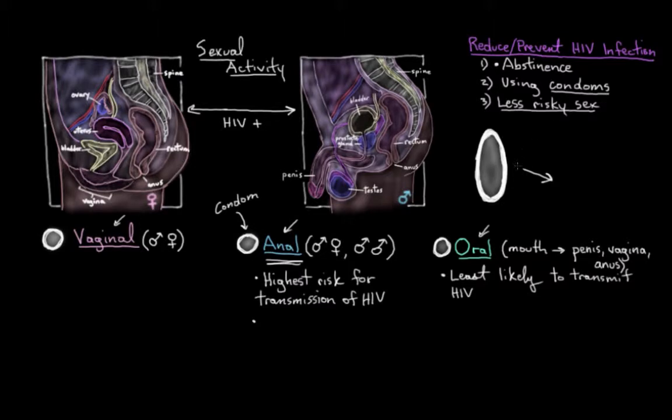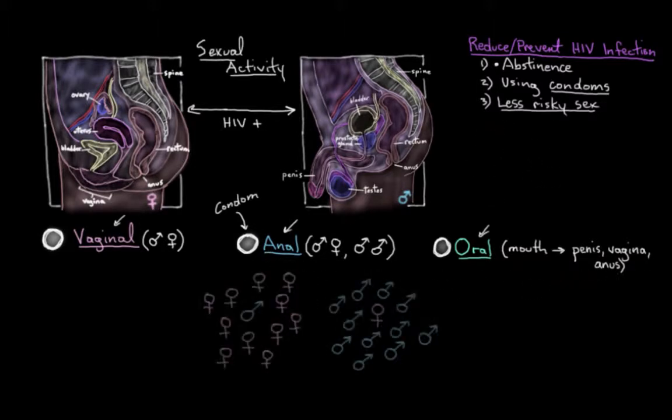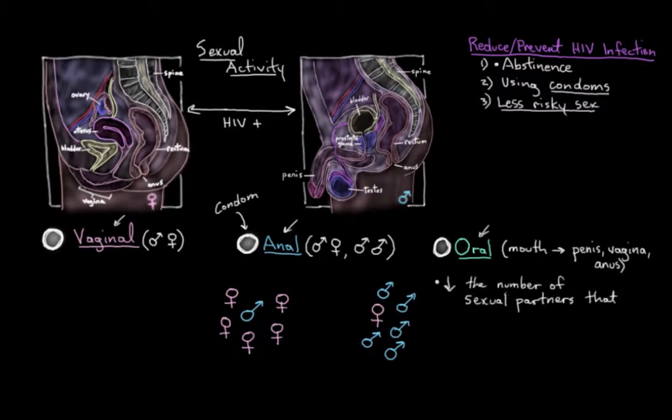And another strategy in this sexual domain is to reduce the number of sexual partners that you have. And this is for two reasons. One is that the more sexual partners that you have, the higher the likelihood is that one of your sexual partners has been exposed to HIV. Remember, often there's no outward symptoms of an HIV infection. So limiting your number of partners, or just having one uninfected partner that you're in a monogamous relationship with, that'll reduce your risk of becoming infected.